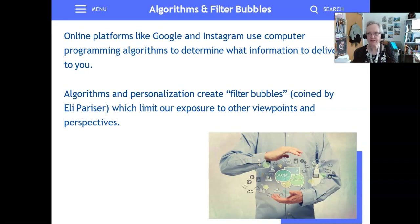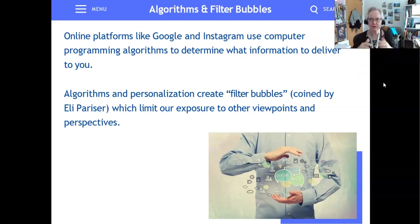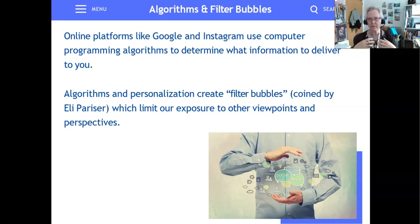Online platforms — Google, Instagram, Reddit — use computer programming algorithms to determine what information to deliver to you. They learn with these algorithms to get closer and closer to what you're looking for. They call this personalization, and it is used a great deal in marketing. But this personalization also creates a bit of a bubble around you. If we are always looking for one type of perspective, then the information we retrieve may include our own unconscious biases as well as the biases of the people who put that information up on the web. Eventually, we have our own voice echoing back to us — an echo chamber. That limits our exposure to viewpoints outside our own, and that can have real-world consequences as well as making your research less sound.